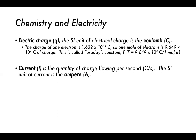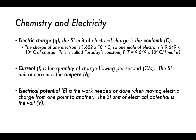Faraday was a physicist-chemist who worked extensively in electrochemistry. Current, given the letter I, is the quantity of charge flowing per second — coulombs per second — with the SI unit being the ampere (A). Electrical potential, given the letter E, is the work needed or done when moving electric charge from one point to another, with the SI unit of the volt (V). In almost all examples we'll discuss, we'll be working with electrical potential in units of volts or millivolts.